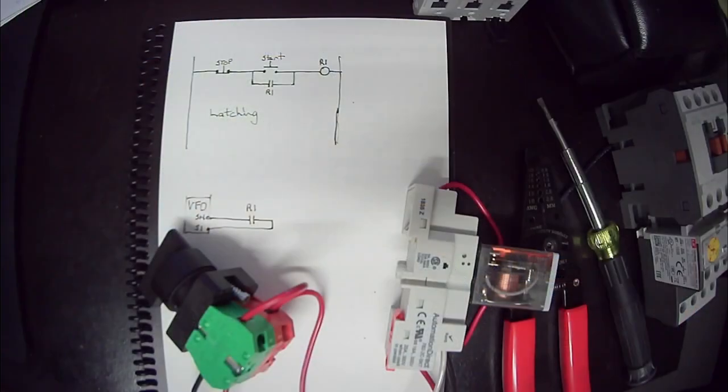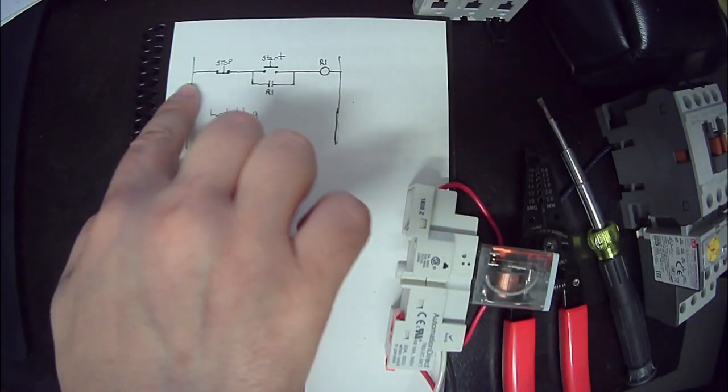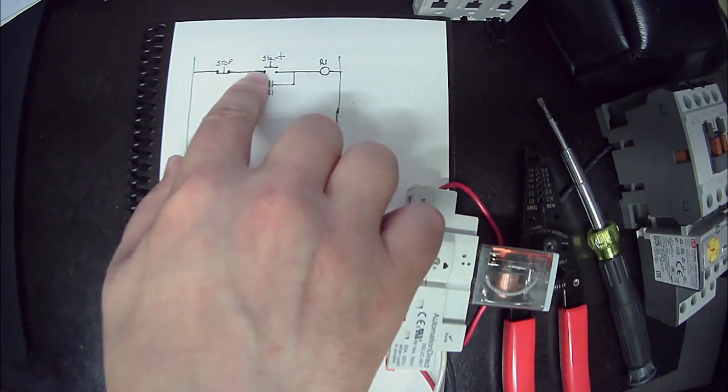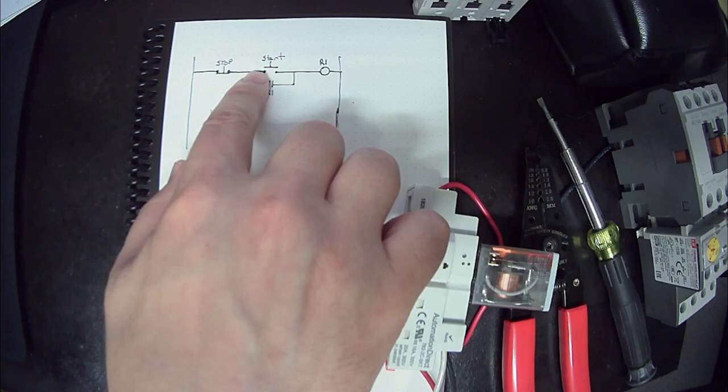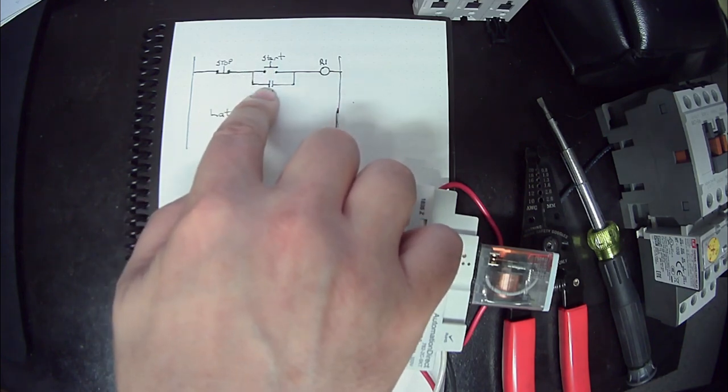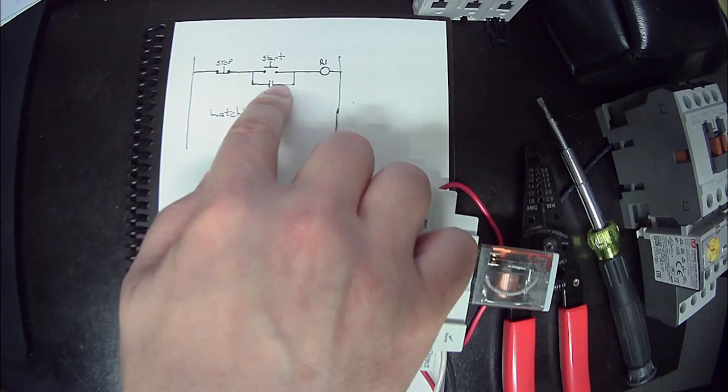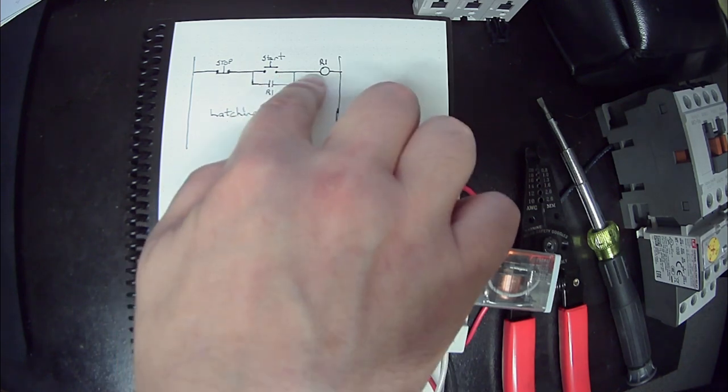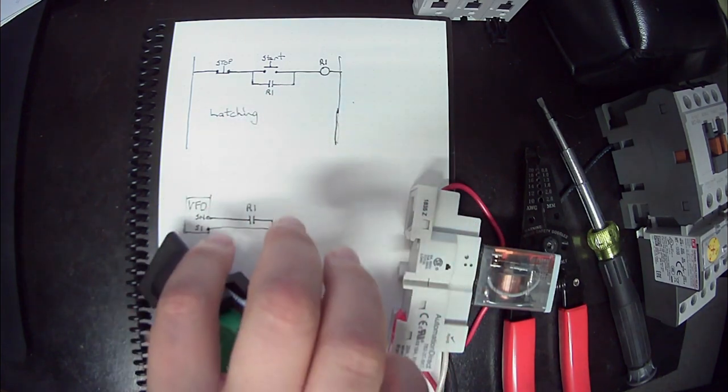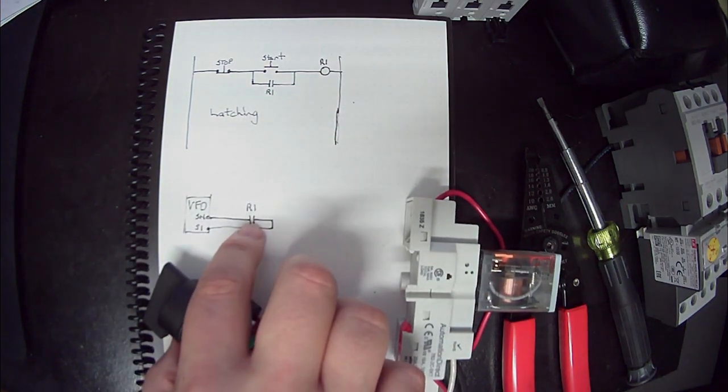We're going to walk through that real quickly. I'll go ahead and move on over here to my drawing. If you look right here, I'm going through my stop, then I split off and I go to my start button and I go down to one of the contacts on my relay. Then they come back together and they both go to the A1 of my relay.